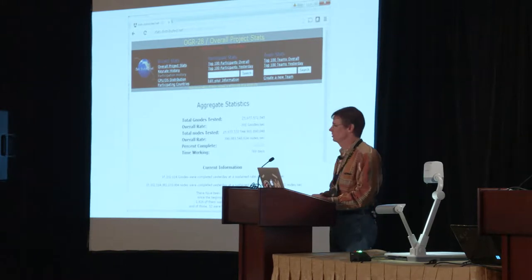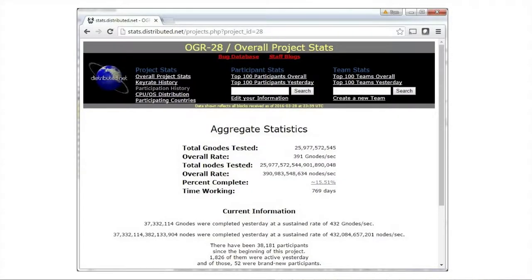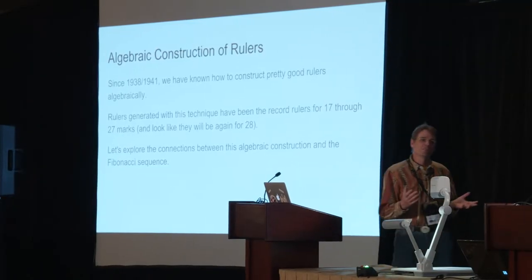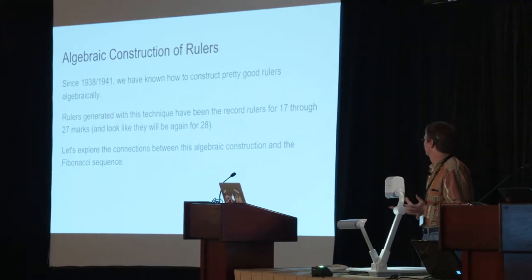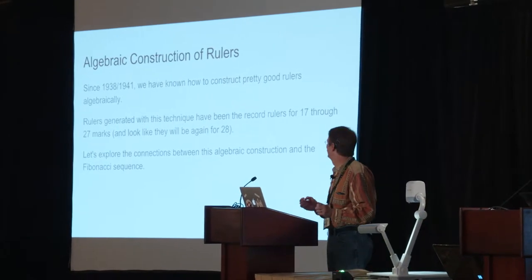Here are some statistics — there are just billions and billions of nodes being processed all the time, with lots of people contributing. The interesting thing is we actually know how to build pretty good rulers using algebraic techniques, and these rulers have been shown to be optimal for all sizes from 17 through 27 so far. It will probably happen again for 28, but we don't know that for sure. I'm going to tell you how you can construct one of these near-optimal rulers with pencil and paper.